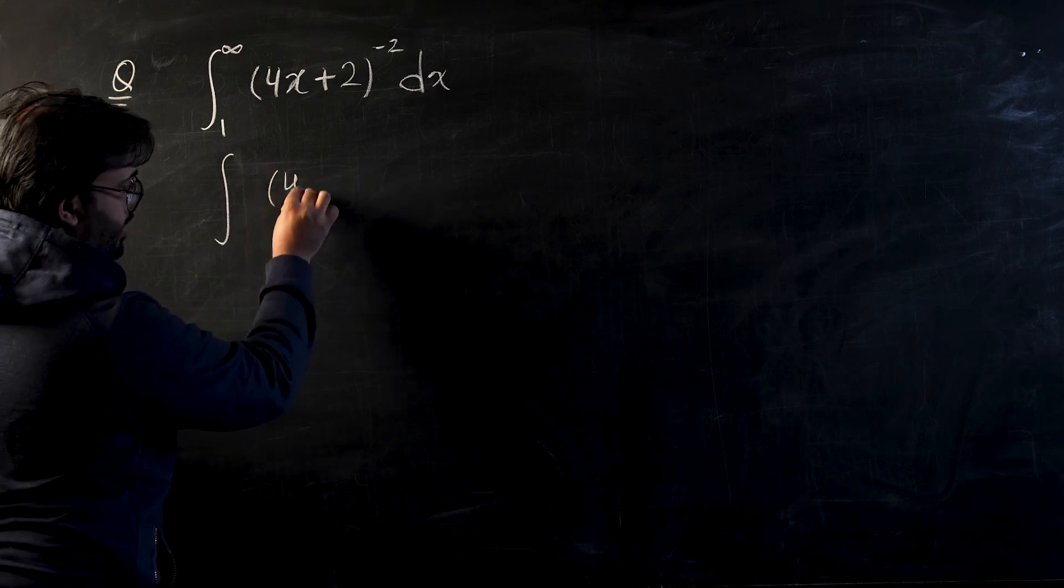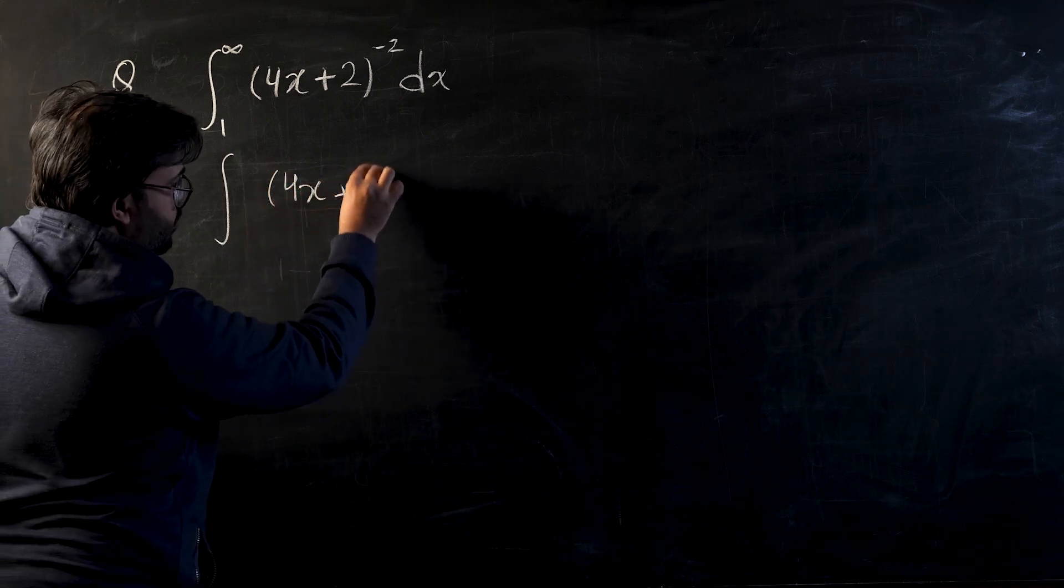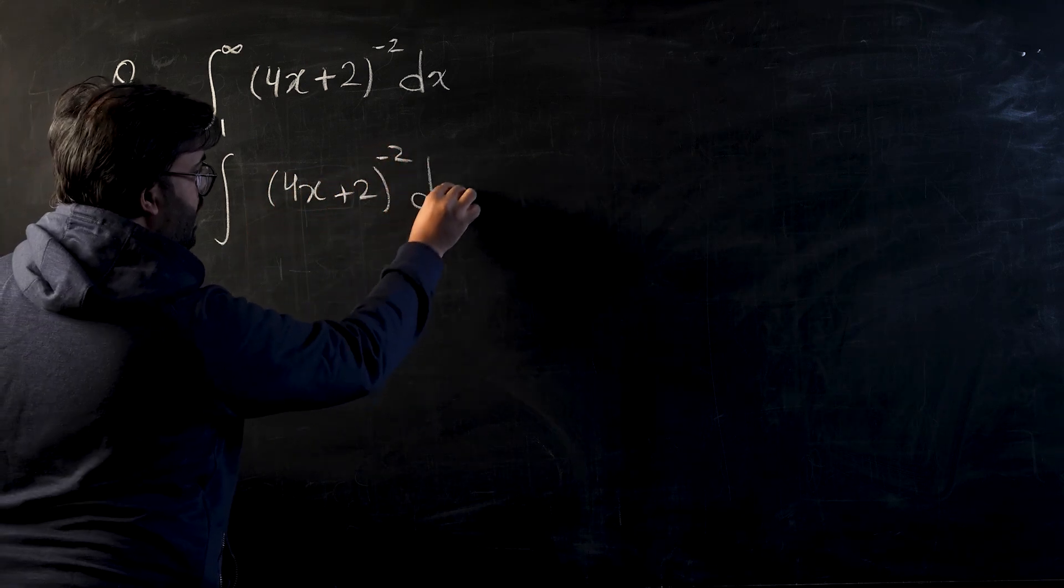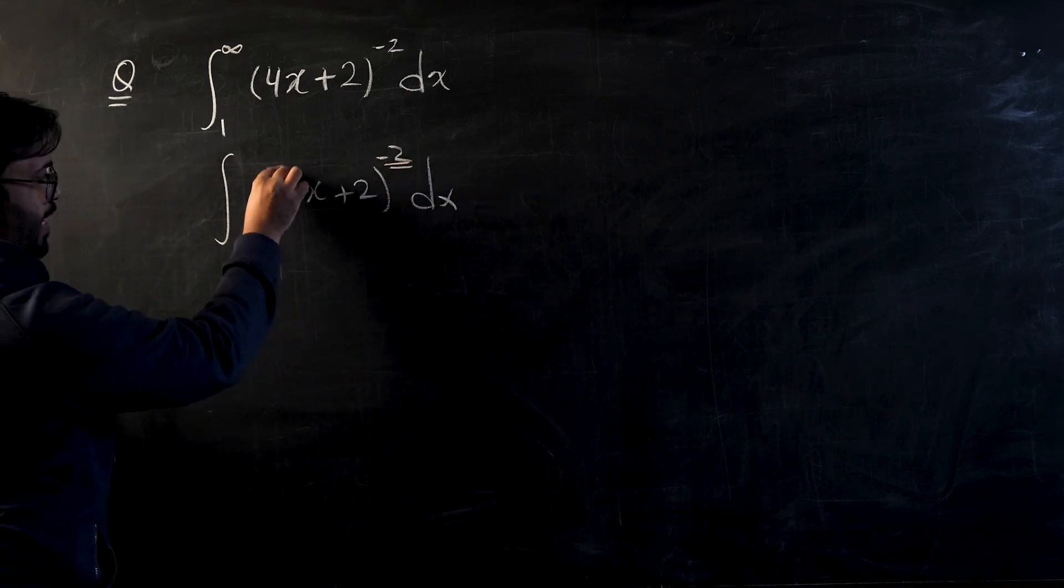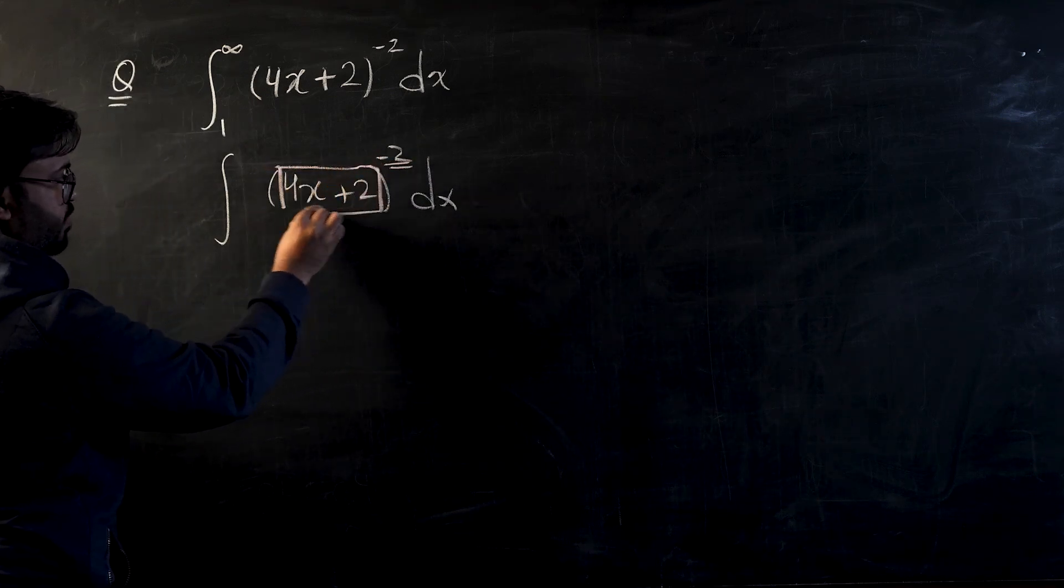So I have (4x+2) to the power negative 2 dx. I know that my operator is right now this power and the box I have is 4x plus 2.